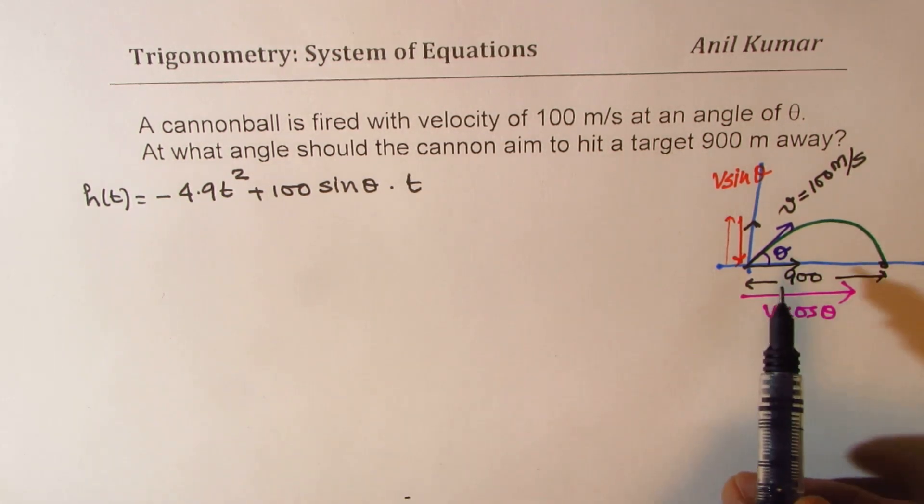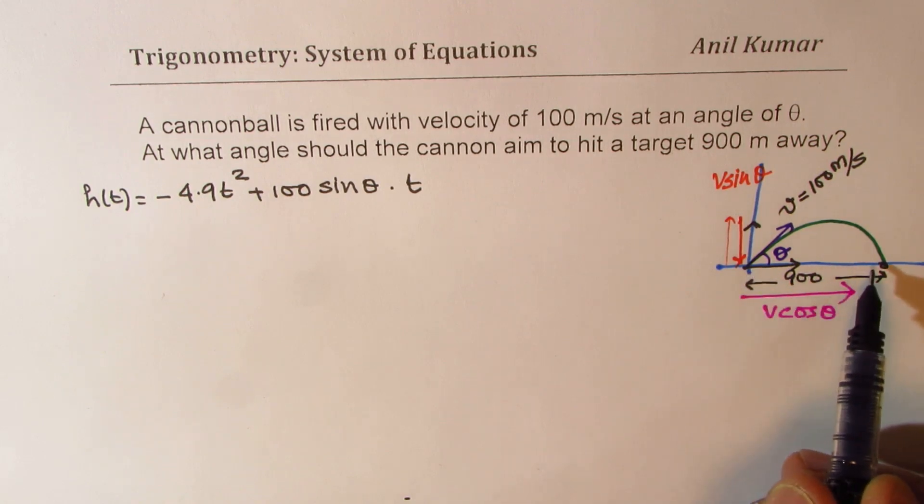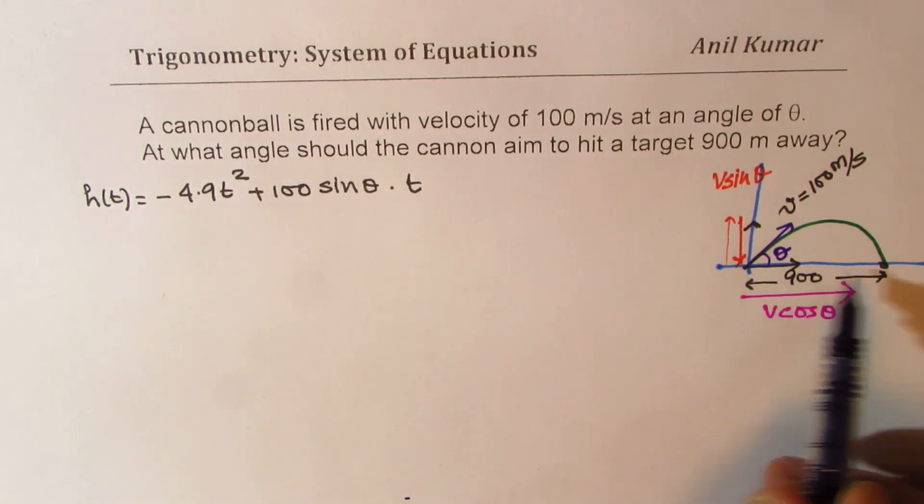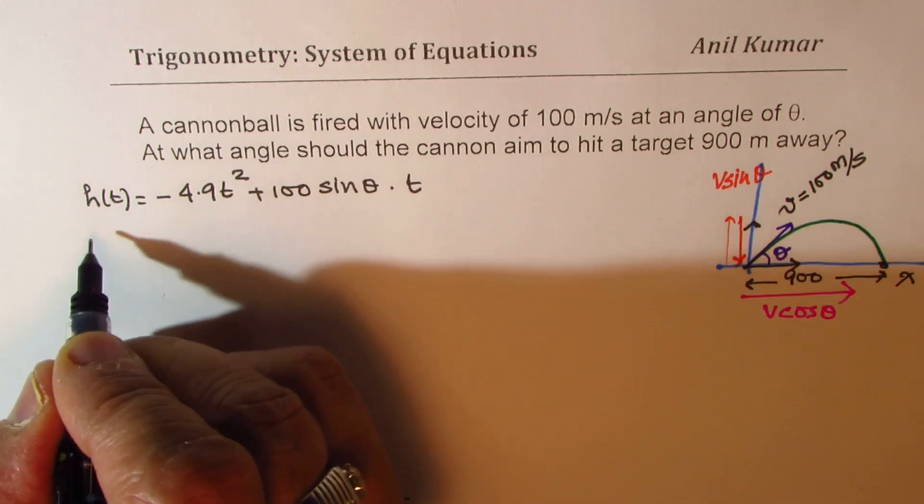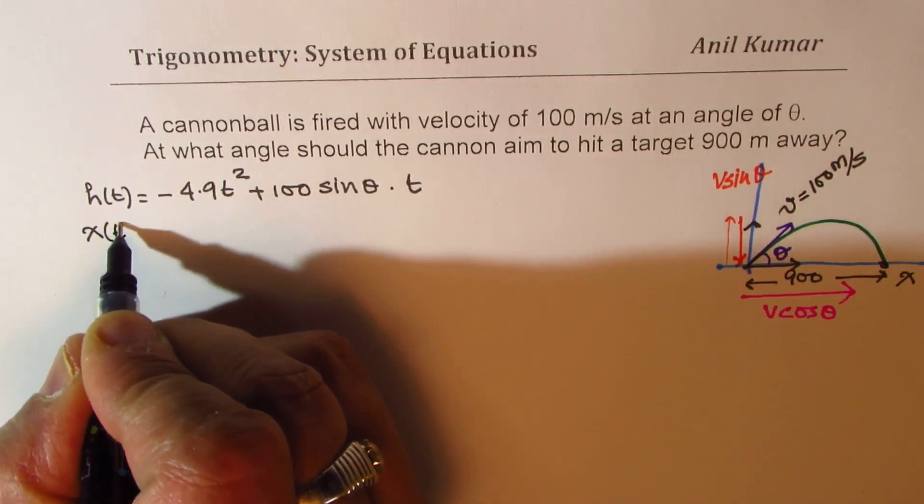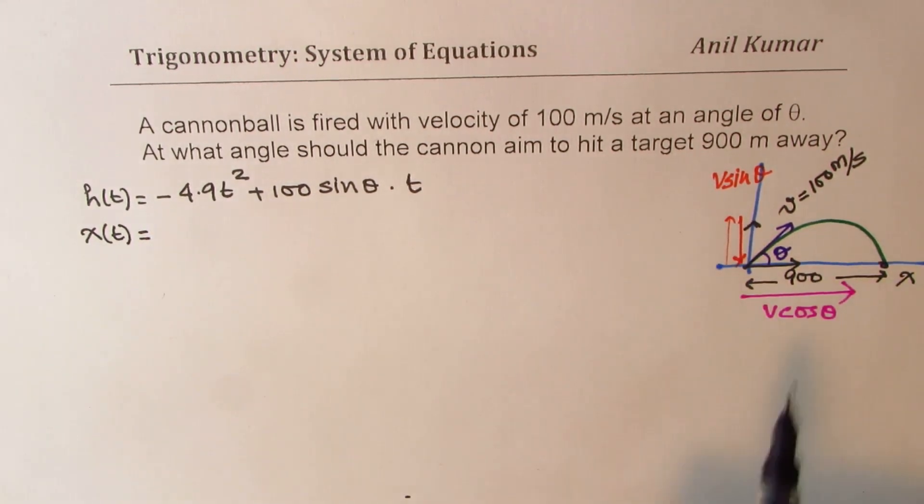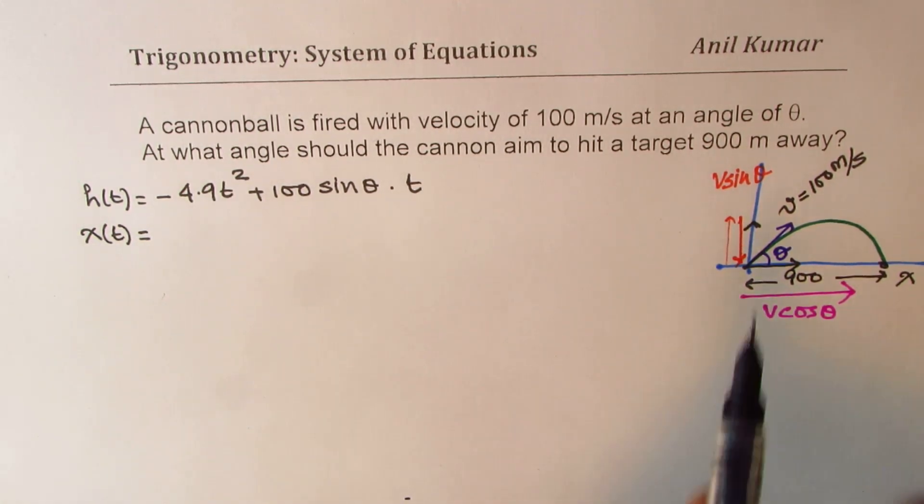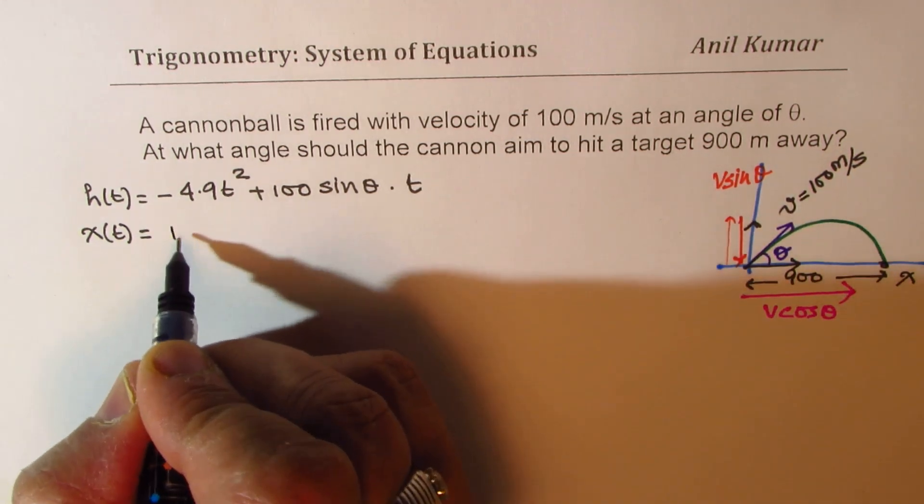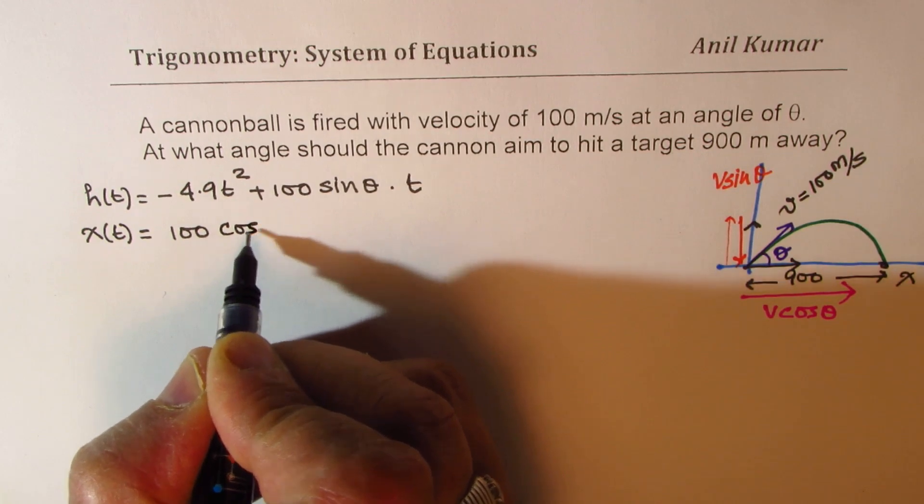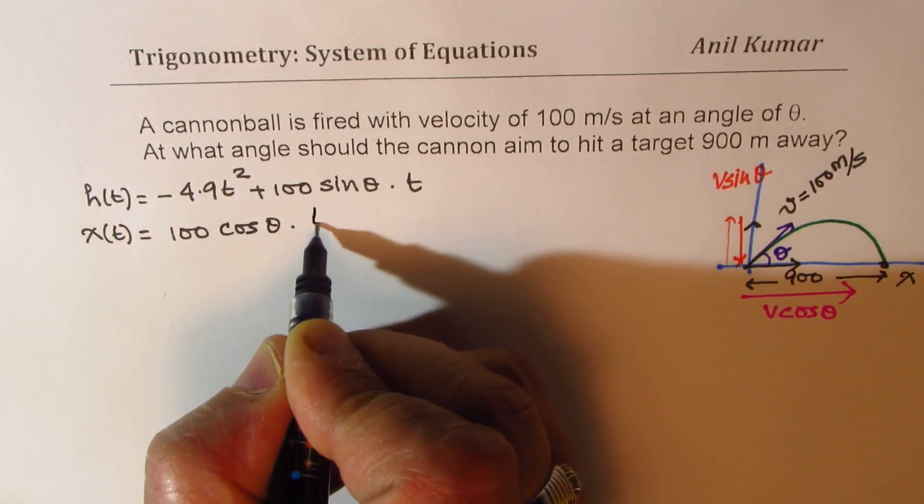Now, the other equation is relating the horizontal movement. So horizontal distance, let us call this distance x with time. So x with time is given as velocity into time. The velocity in this case is 100, because velocity is 100, 100 cos theta.